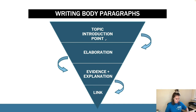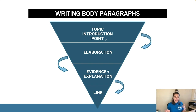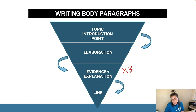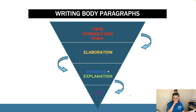Basically that provides context to your argument. Then you move into evidence and explanation — this is as it suggests your evidence. It's all about saying here is what I have to prove my point and then I'm going to elaborate on it. You want three or four pieces of evidence and explanation in each body paragraph, and then you just link it back.